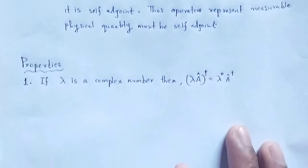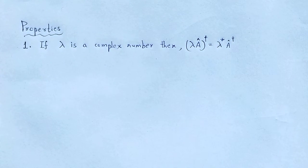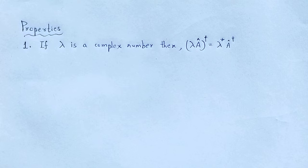Property number one: if lambda is a complex number, then lambda A-cap-dagger is equal to lambda-star A-cap-dagger.